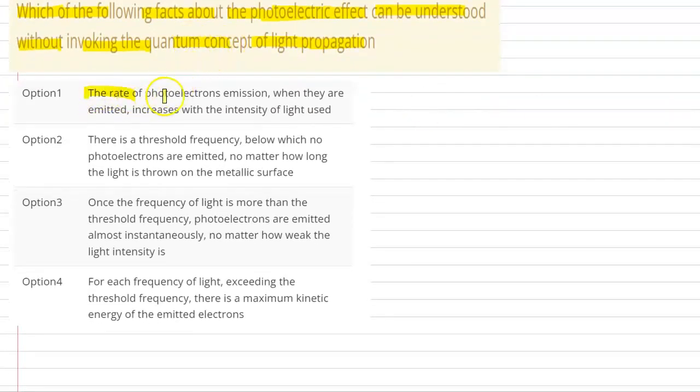The rate of the photoelectrons' emission when they are emitted increases with the intensity of light used. Second, there is a threshold frequency below which no photoelectrons are emitted no matter how long the light is thrown on the metallic surface.